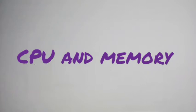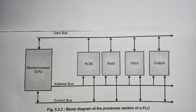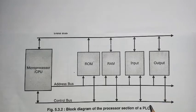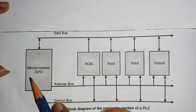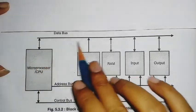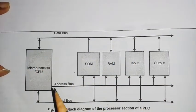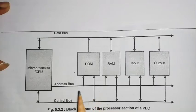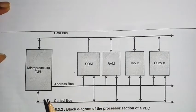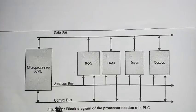Today we see the next topic: the functions of different parts of the PLC. The first part is the CPU — central processing unit. This is the block diagram of the processor section of the PLC. The CPU is connected to ROM, RAM, input and output via the address bus, control bus, and data bus. We will see the detail explanation of the CPU in notes form one by one.